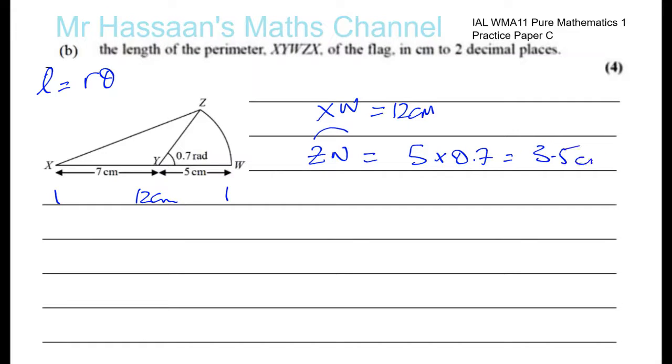We need to find XZ. We don't need YZ because it's inside the shape - we need the perimeter, which is the outline. XZ is part of this triangle here. This length is the same as this length because they're both the radius, so this is 5 centimeters. We can work out this angle because this is a straight line, so the angle is π minus 0.7 in radians.